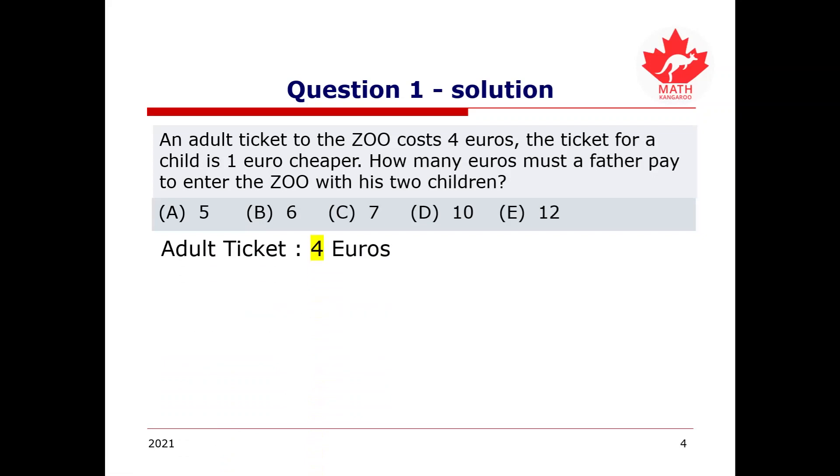The question says that adult ticket costs 4 euros. As for the price of a child's ticket, the question states that it is 1 euro less than an adult ticket. So, since the price of an adult ticket is 4 euros, we can simply go 4 take away 1, and get 3. Therefore, the cost of a child's ticket will be 3 euros.